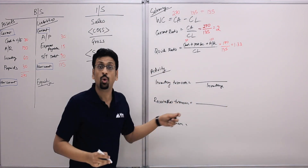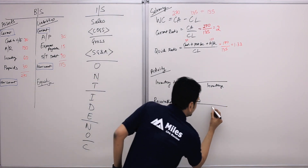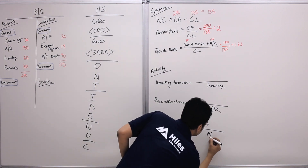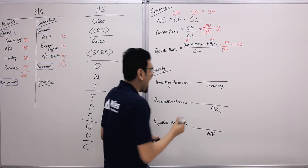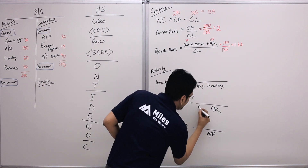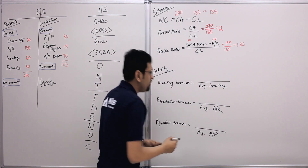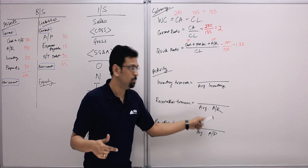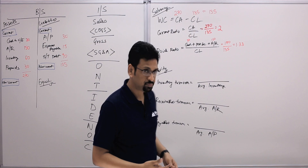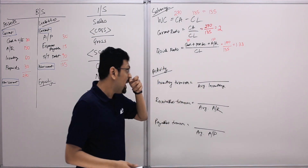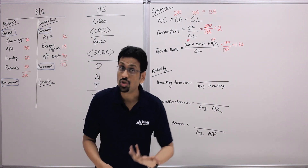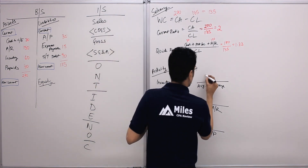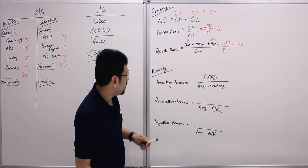For receivables turnover, the denominator is receivables. For payables turnover, the denominator is payables. We use averages — average inventory is beginning plus ending inventory divided by two; similarly for receivables and payables. For inventory turnover, the numerator relates to cost of goods sold — so it's COGS divided by average inventory.